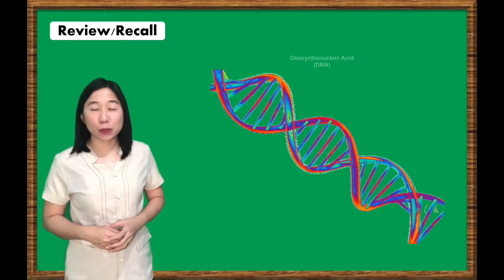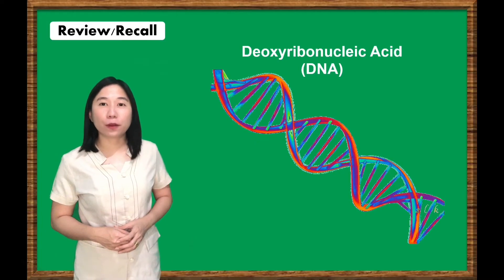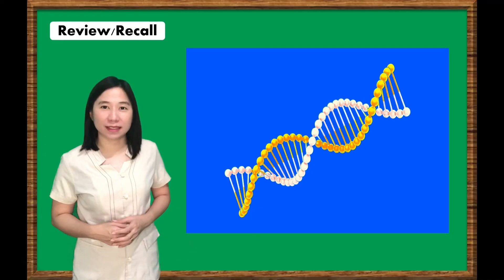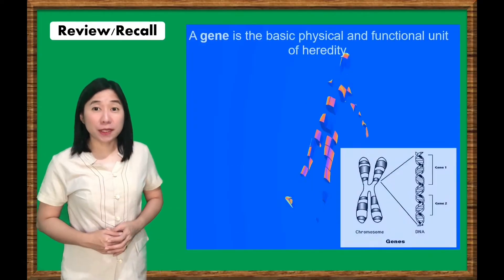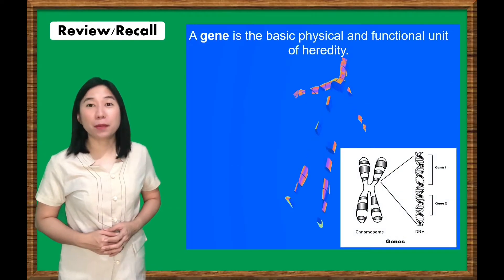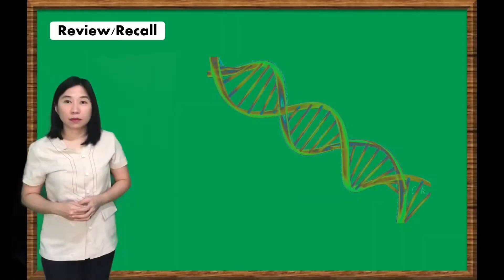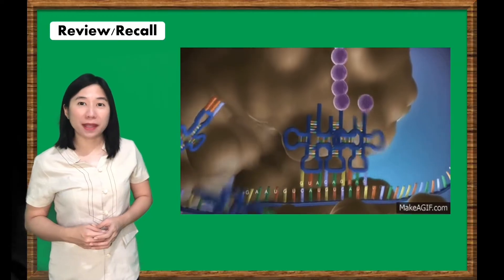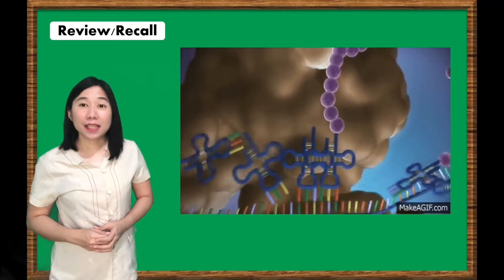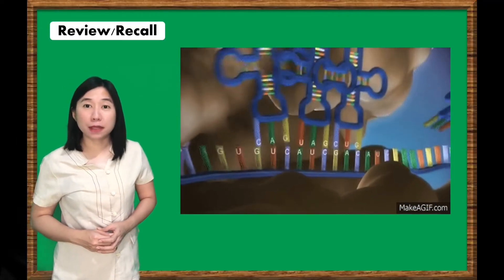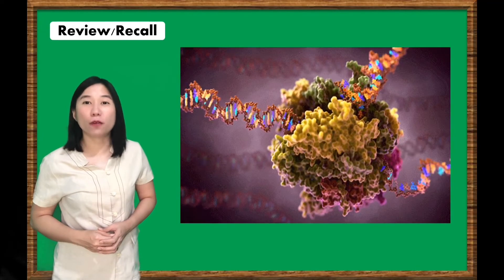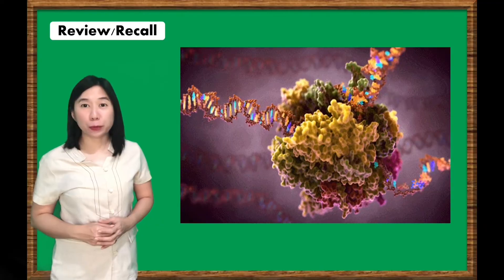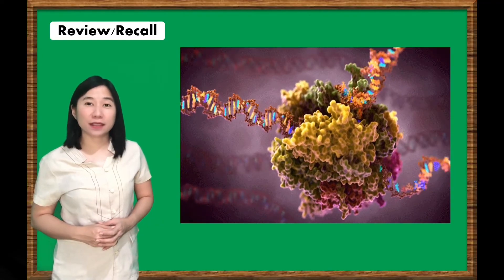Deoxyribonucleic acid, or DNA, is the chemical name for the molecule that carries genetic instructions in all living things. The genes that determine who you are are made up of DNA. Your DNA gives all the instructions for all the proteins your body makes, and in return, the proteins determine the structure and function of all your cells. How are proteins produced? Let's find out in today's lesson.